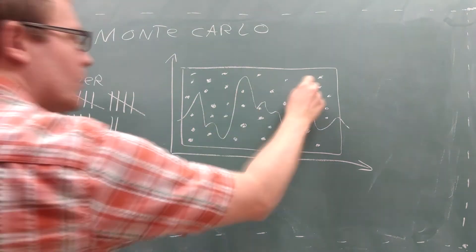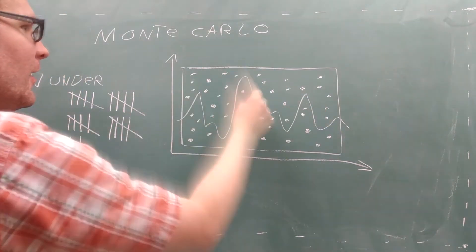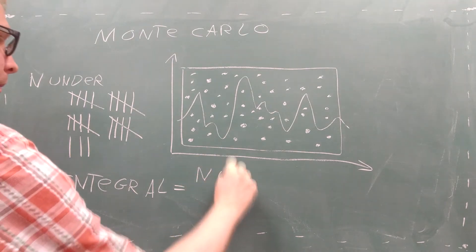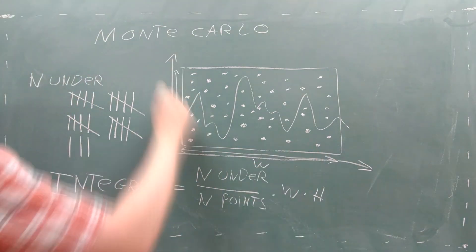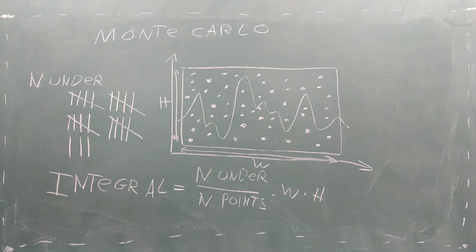If you use lots of random points, then you can estimate the integral as the number of points that fell underneath the function, divided by the total number of points, and multiplied by the area of the rectangle. The more random points you generate, the more accurate your answer will be.